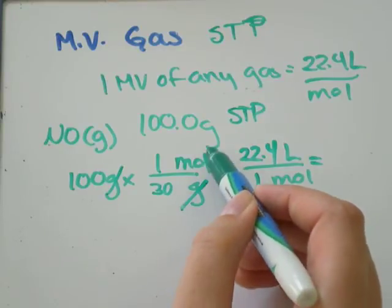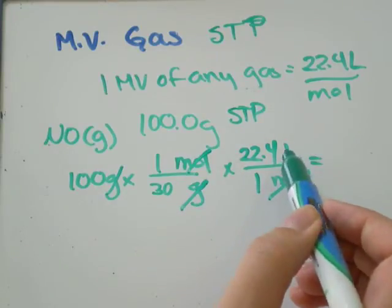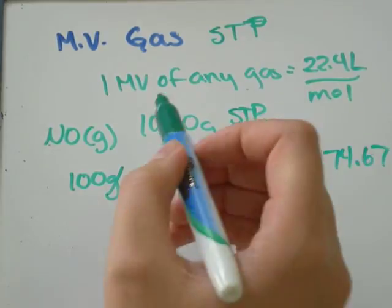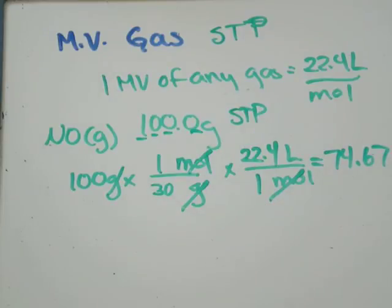Grams cancel with grams. Moles cancel with moles. And we're left with liters. And so, I will get 100 divided by 30 times 22.4. And I get 74.666 repeating. So, I will round that to 74.67 because there's 1, 2, 3, 4 figs in the question. And that will be in the unit of liters. Cheers.